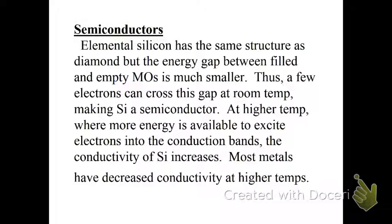That brings us to semiconductors, which is elemental silicon. Semiconductors are important because that's all in our electronics. They have basically the same structure as diamond, but the energy gap is closer together, and then we have a few electrons that can skip across this gap, which makes them a great semiconductor. At higher temperatures, where more energy is available to excite the electron, the conductivity of silicon increases. Most metals have decreased conductivity at higher temperatures, but silicon increases.